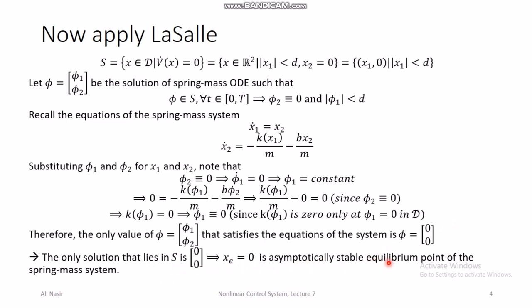It is important to learn how to apply LaSalle's theorem, especially the set S step. You gather all the points where V̇ = 0 — those constraints define set S. You put those constraints into the ODE equations. If, within those constraints, φ₁ and φ₂ can only have certain values, and if the only values satisfying both the ODE and the set S constraints simultaneously are (0, 0), then you can conclude asymptotic stability.